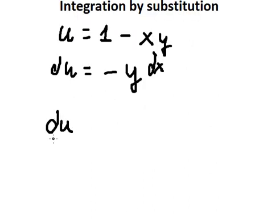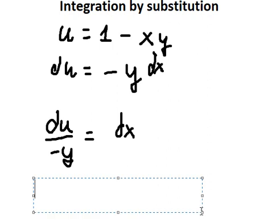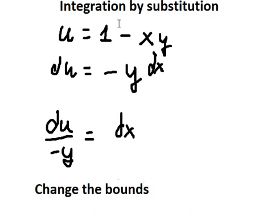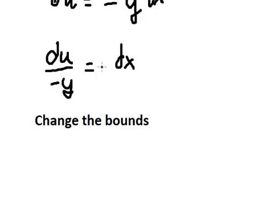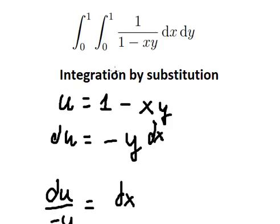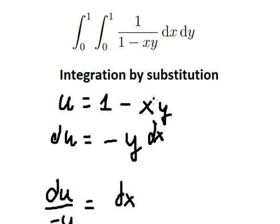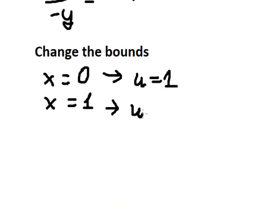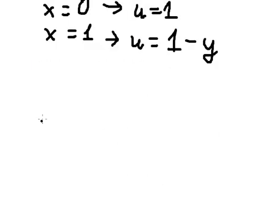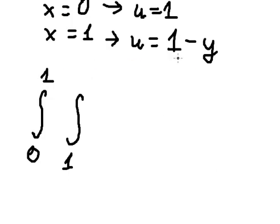Since we don't have negative y, we need to divide both sides by negative y. Next, we need to change the bounds. When x equals zero, u equals 1. When x equals one, u equals 1 minus y. So zero becomes one, and one becomes 1 minus y.